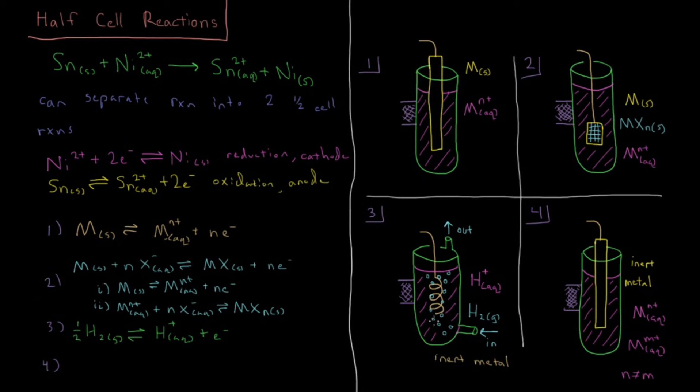And this can be a standard hydrogen electrode if you have both the gas at a pressure of one bar or a fugacity of one bar, and the hydrogen ions at a molarity of one molar or an activity of one molar as well. And we're going to see more about the standard hydrogen electrode later.